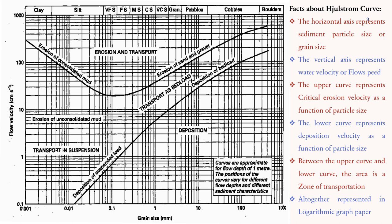The area between the erosion and deposition velocity curves defines the transportation zone. Within this zone, sediment can be transported as bed load or in suspension. Erosion by unconsolidated mud is also represented. The sediment size categories shown include clay, silt, and sand with corresponding grain sizes.